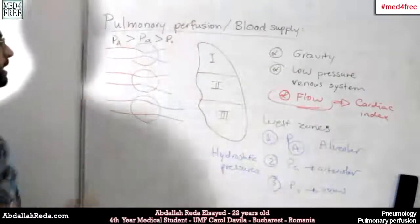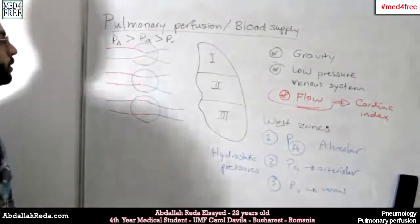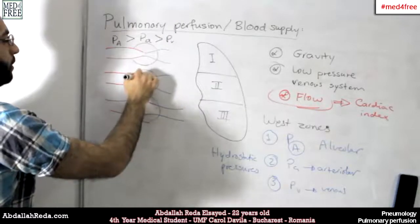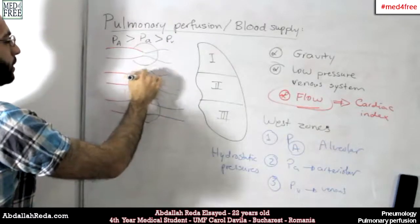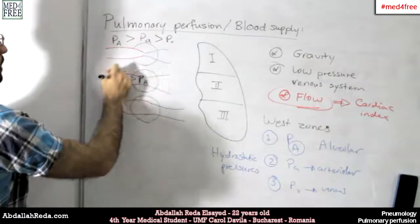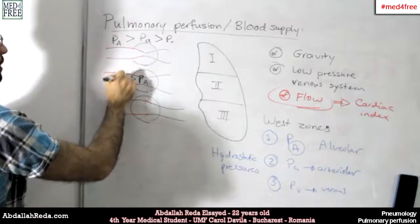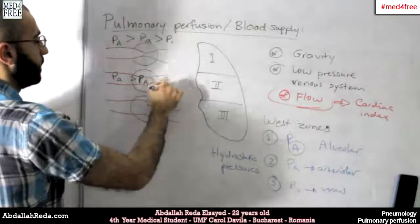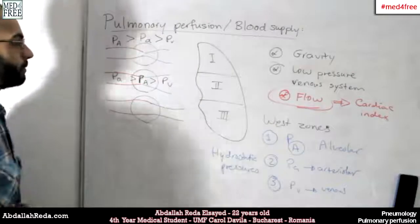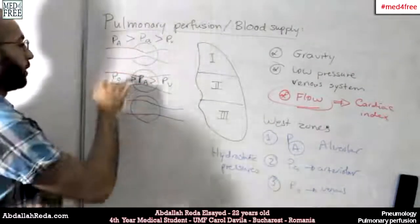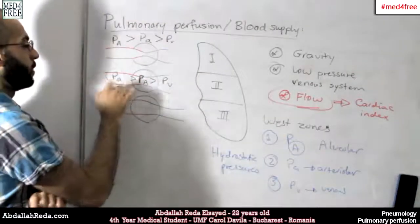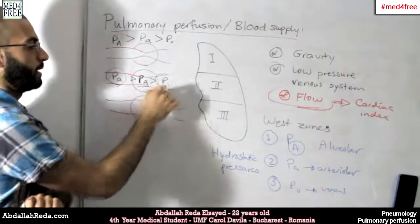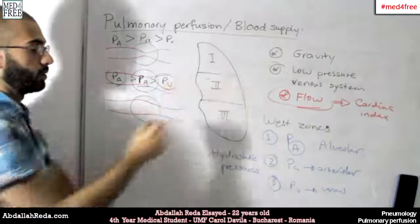In the second region, the middle part of the lung, the alveolar pressure falls in between the hydrostatic pressures. The arteriolar pressure is the highest, then the alveolar pressure, and then the venous pressure.